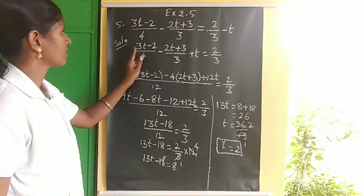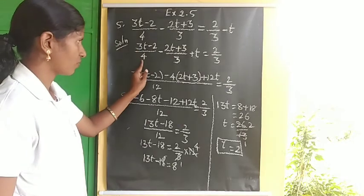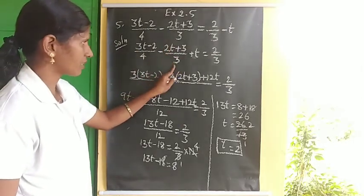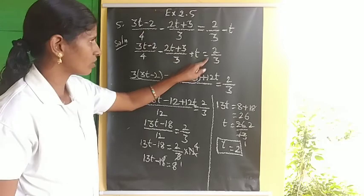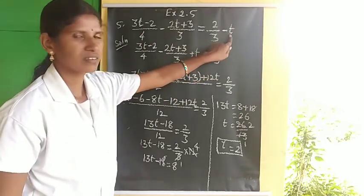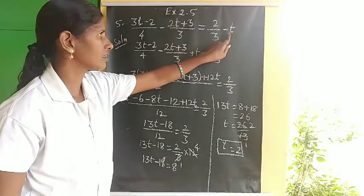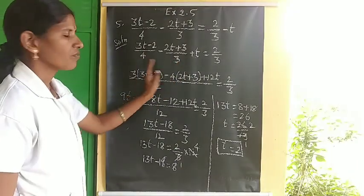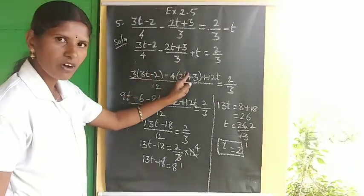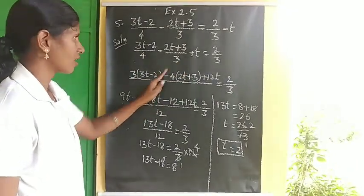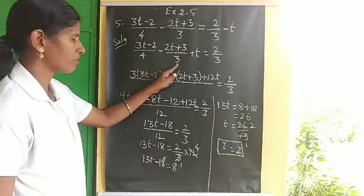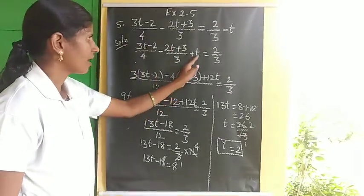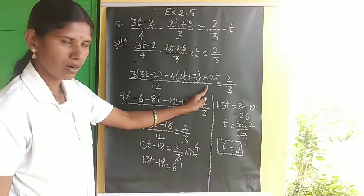Once again for the fifth sum: 3t minus 2 divided by 4, minus 2t plus 3 divided by 3, plus t, equals 2 by 3. First step: bring t to LHS. Then find LCM of 4 and 3, which is 12. Multiply first term by 3, second term by 4, and third term by 12.